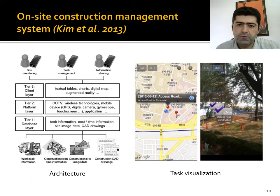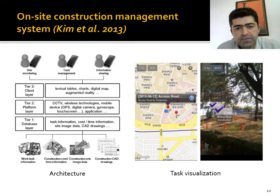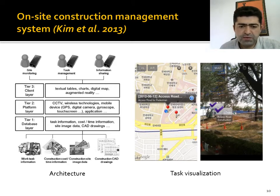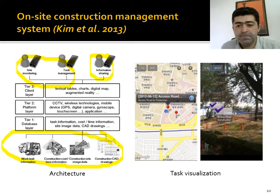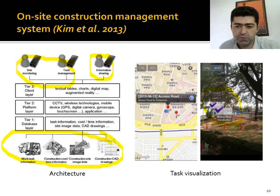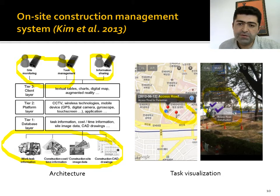The first example belongs to progress monitoring and task management in the construction project management domain. Kim and others developed a system proposing an onsite construction management system where construction information is shared and used in task management and site monitoring activities. Tasks are visualized on a digital map and pinned using augmented reality. Managers can assign roles to workers and check their statuses using the system.